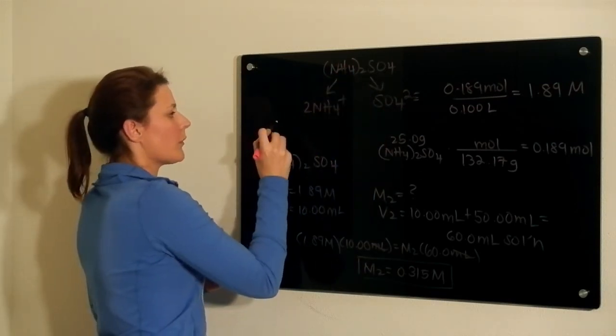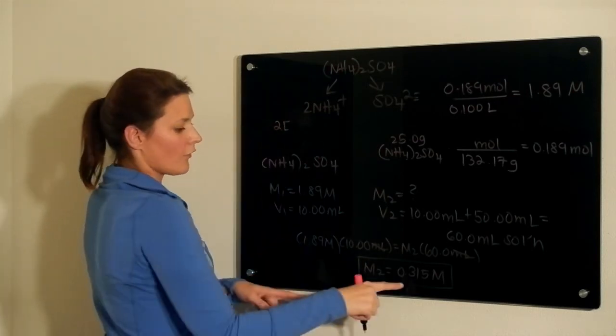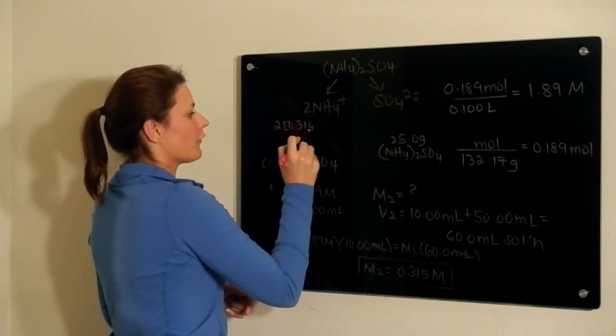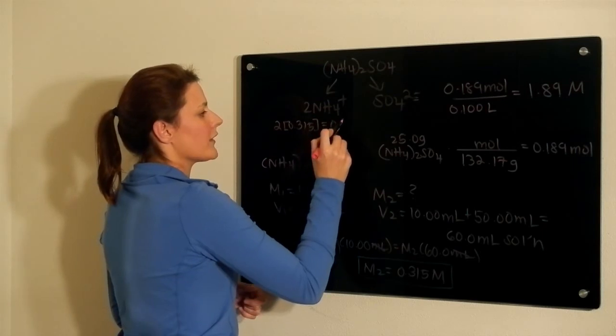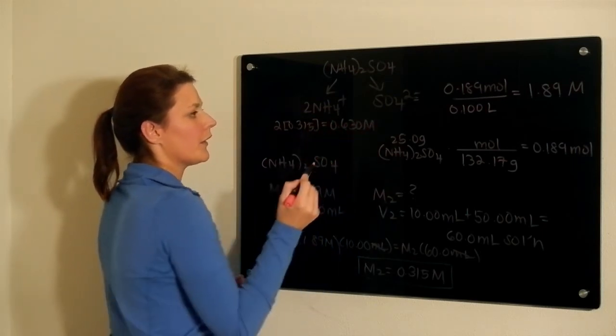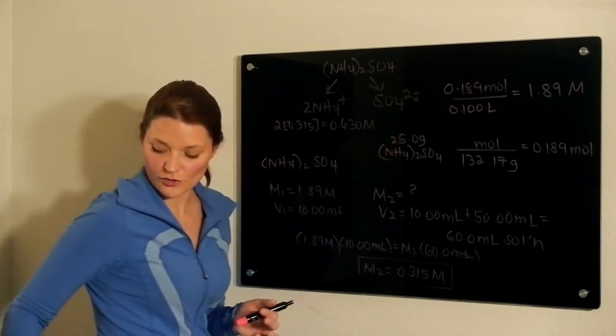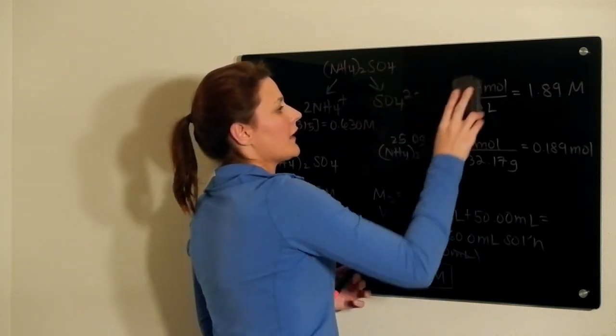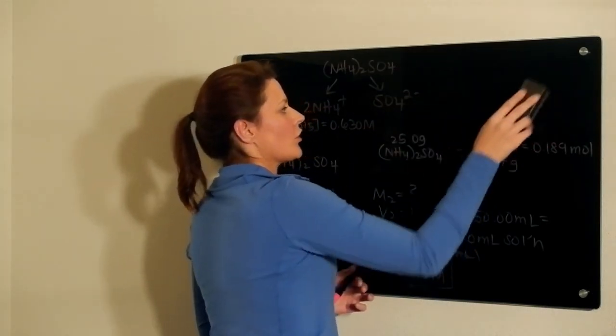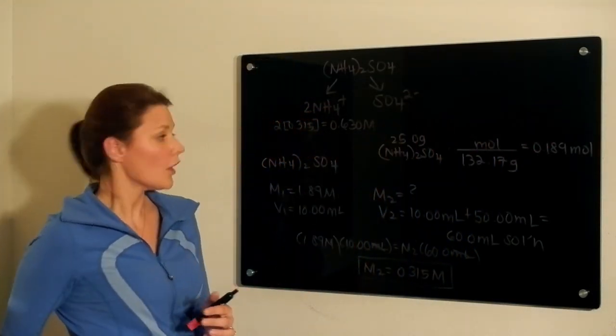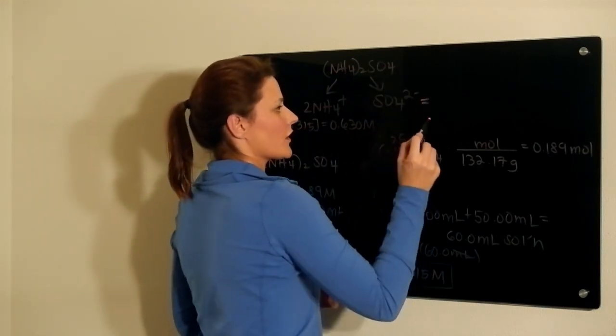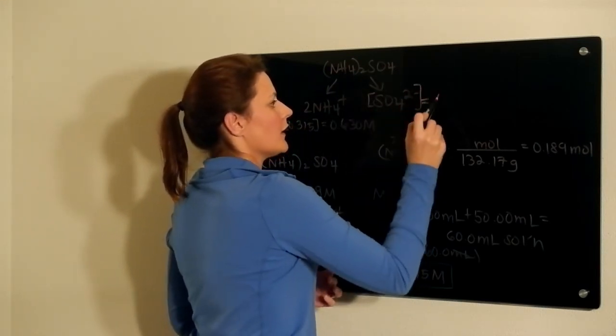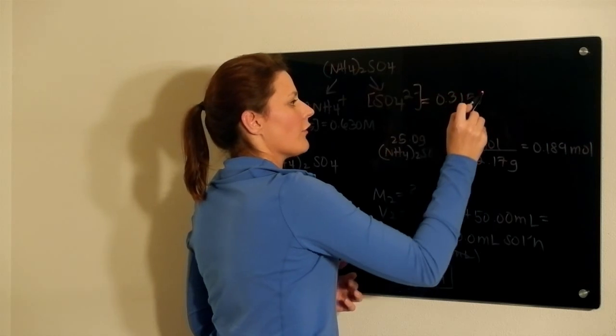So the concentration of ammonium would be twice that of 0.315, which gives you 0.630 molar. And the concentration of your sulfate is simply going to be equal to the concentration we just solved for, 0.315 molar.